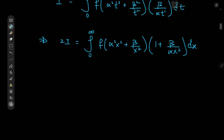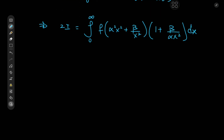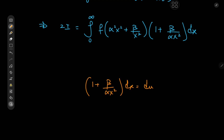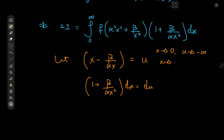Now we could use a nice substitution. It would be nice if that differential element looked a lot more compact. If I consider the differential element 1 plus beta divided by alpha x squared dx and set it equal to du, we could work backwards and integrate to see that we need to let u equal x minus beta divided by alpha x. As x tends to 0, u tends to negative infinity, and as x tends to infinity, u tends to infinity as well.